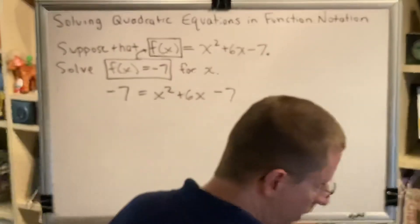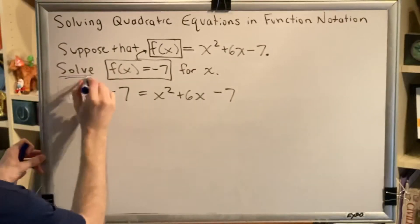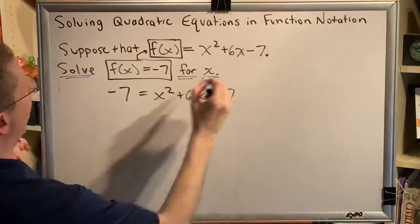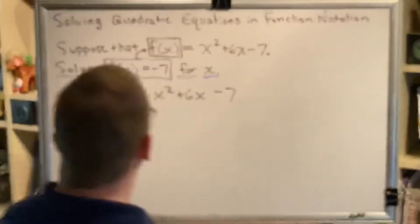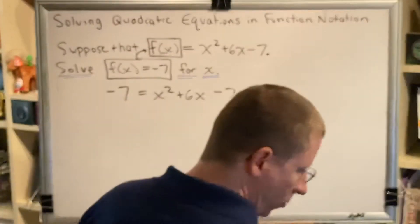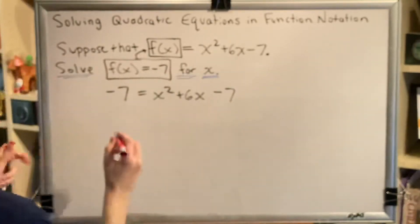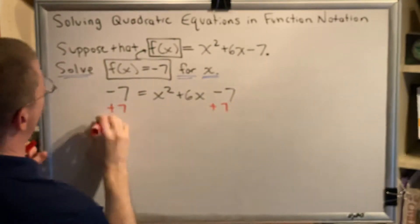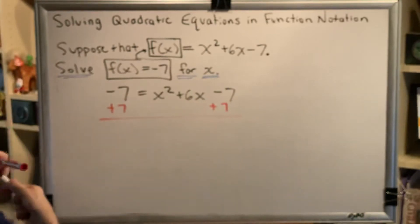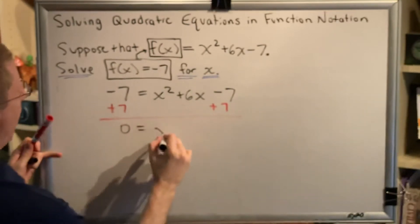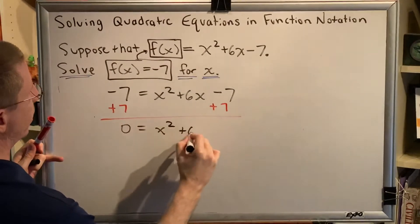Then we need to, as the instructions say, solve for x. Okay, so the way we're going to solve for x is we're going to get all terms on one side with 0 on the other. So let's add 7 to both sides. Then we have 0 equals x squared plus 6x.